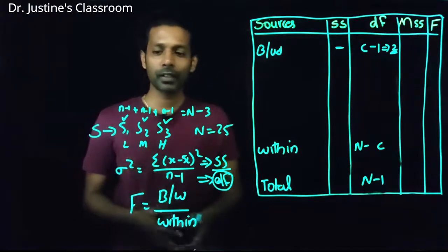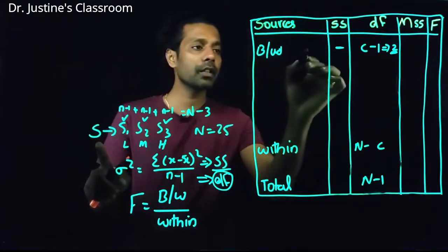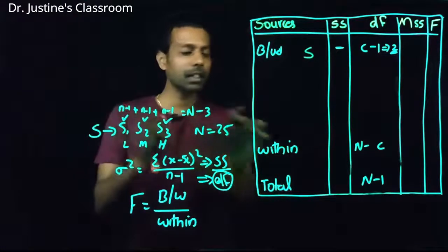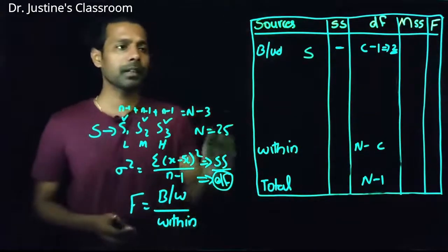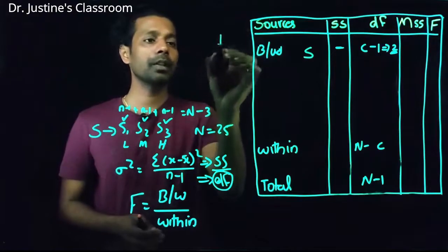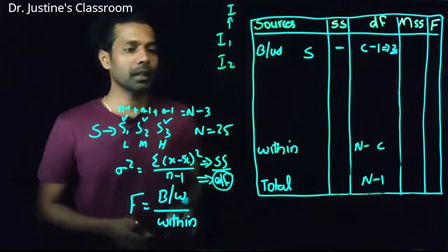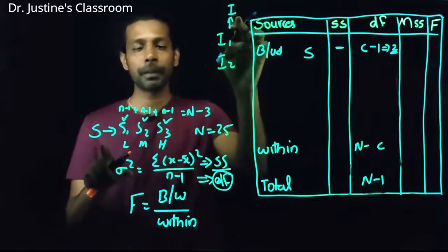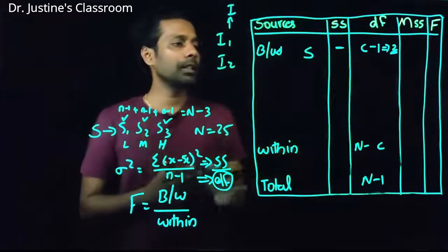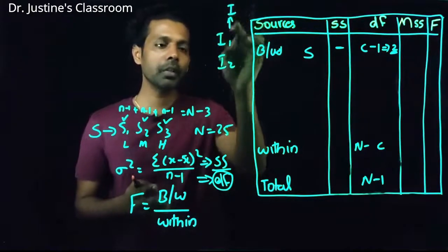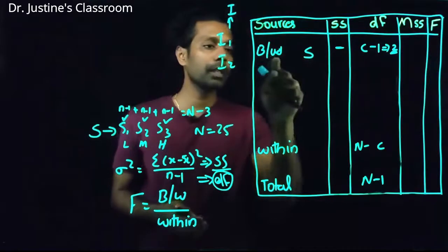What if you have one more variable? Let's say I add another variable: illumination — I1 and I2. Now the effect of sound on performance is one main effect, and the effect of illumination on performance is another main effect. So I have two between-group sum of squares: between three levels of sound, and between two levels of illumination.